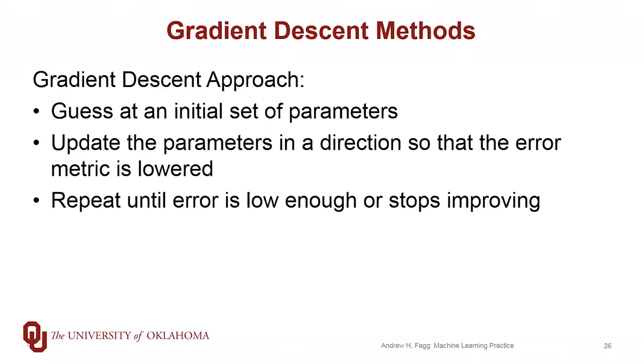So as we've already talked about, the gradient descent approach: we first guess at what the initial set of parameters should be, we estimate the error, estimate the gradient, so how is the error changing as we change the individual parameters. And then we make a choice of updating the parameters a little bit, a small step, so that error goes down. And then this process is repeated until either error is low enough or at least error stops improving.